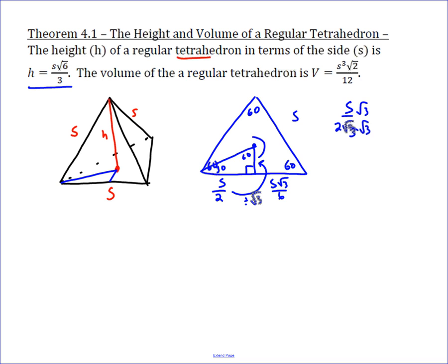And then to go from the short leg to the hypotenuse, you multiply by 2, and that ends up giving you this length being side root 3 over 3, because side root 3 over 6 times 2 is side root 3 over 3.